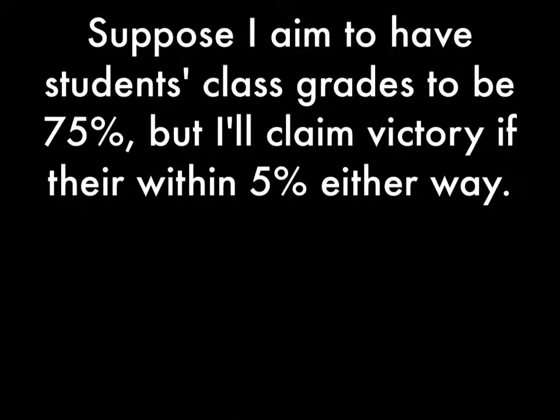So let's suppose that I aim to have my students' class grades to be at about 75%, which for that class is still a little lower than I would hope, but let's just choose a number. Let's say I'll claim victory if they're within 5% either way. The within 5% either way is the absolute value part, because it could be more than 5% or less, which would be negative 5% from that score.